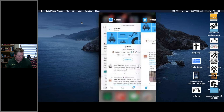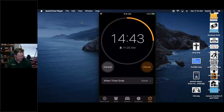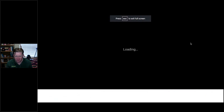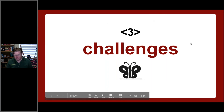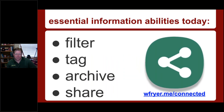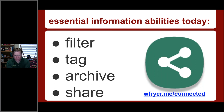I hope those demos were helpful. On the slides you can link to the five apps I recommended. What I want to do now is wrap up by sharing a few challenges. I was filtering information — tagging articles with particular hashtags I and others follow, archiving things in Pocket to consume later, and sharing. I argue these skills — filtering information, tagging it, archiving it, and sharing it — are essential information abilities today. Unfortunately in a lot of schools and classrooms, these aren't part of the conversation, and they absolutely need to be.